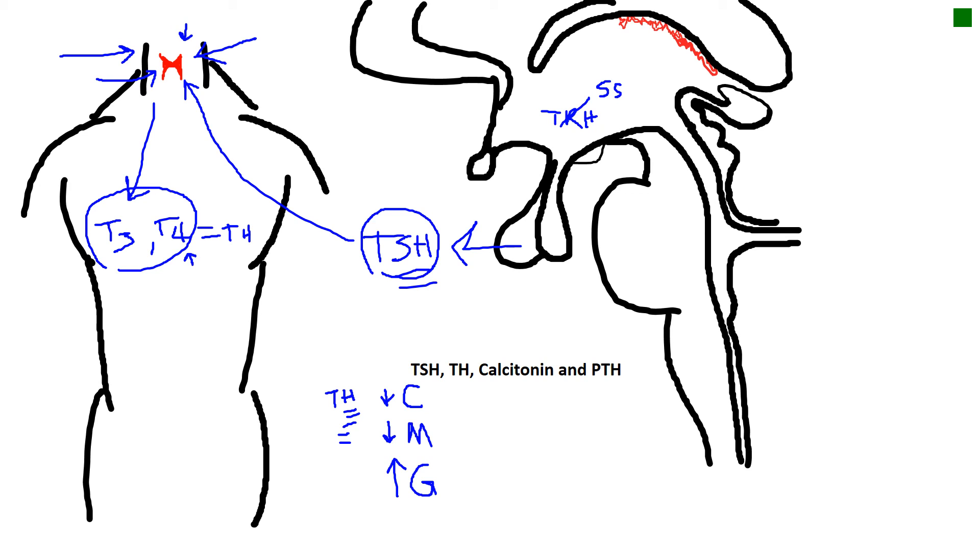There are other cells called parafollicular cells that release a hormone called calcitonin, and I think of it this way: I think of tone it down. Basically, calcitonin decreases blood calcium.